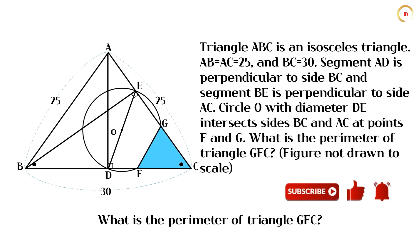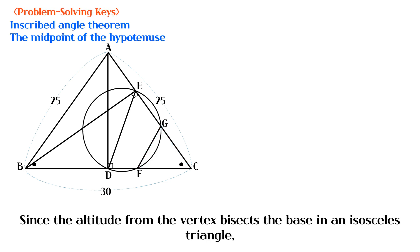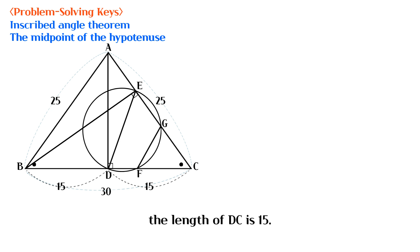Feel free to pause the video now to solve this question on your own. Since the altitude from the vertex bisects the base in an isosceles triangle, the length of DC is 15.